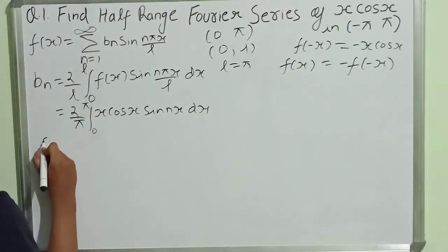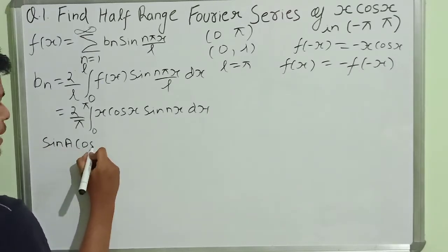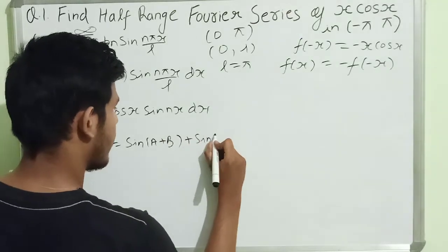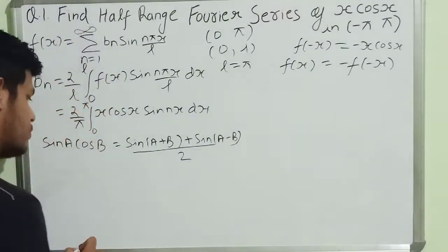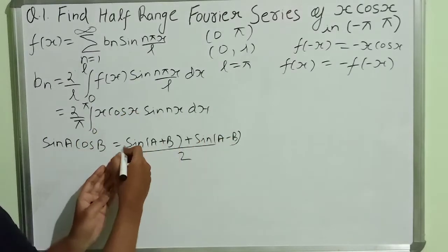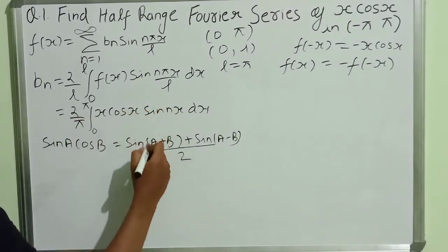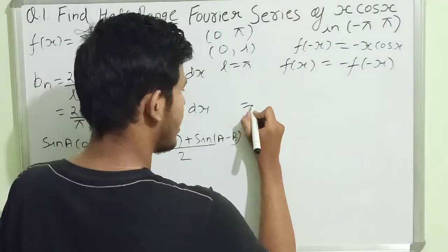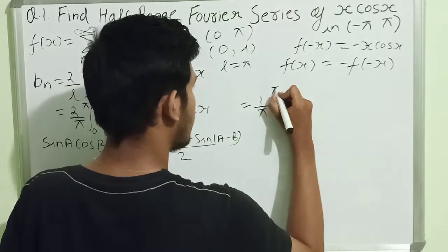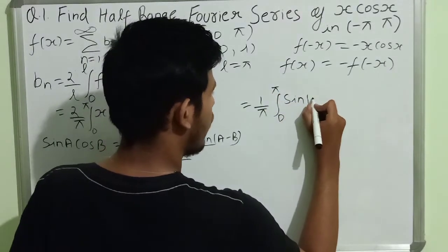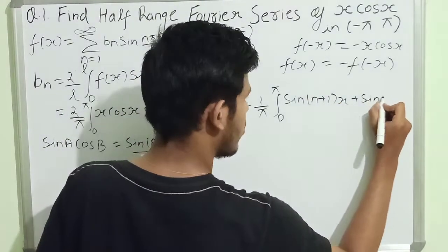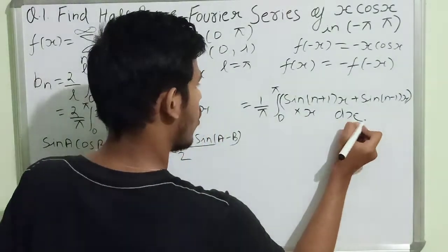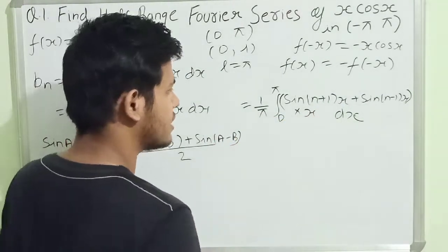Now we know the formula: sin(a)cos(b) equals [sin(a+b) + sin(a-b)] divided by 2. We will rewrite the integrand using this formula and then apply integration by parts. When the 2 multiplies through, we get sin((n+1)x) plus sin((n-1)x). So b_n becomes 1 upon π times the integral from 0 to π of [sin((n+1)x) + sin((n-1)x)] times x dx.